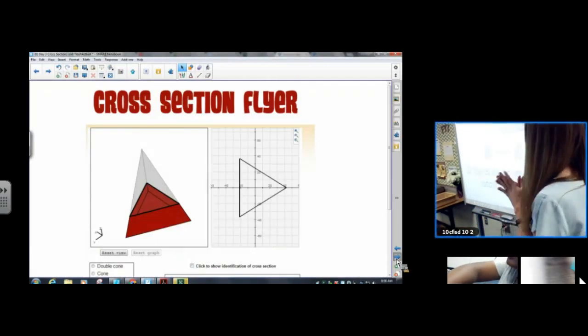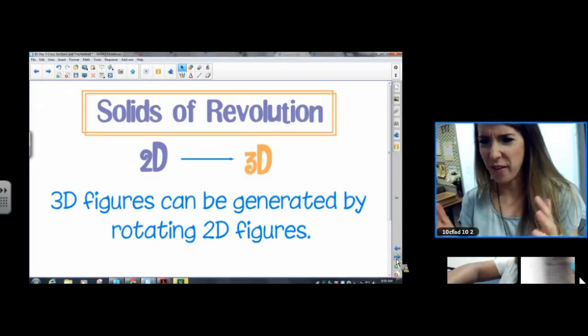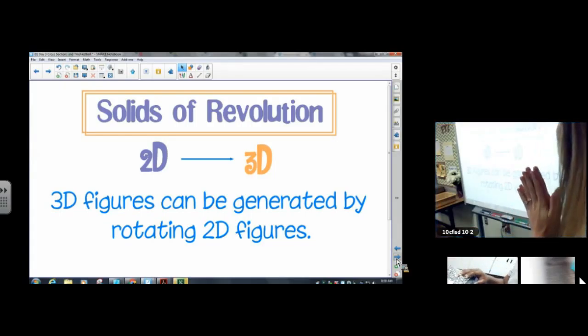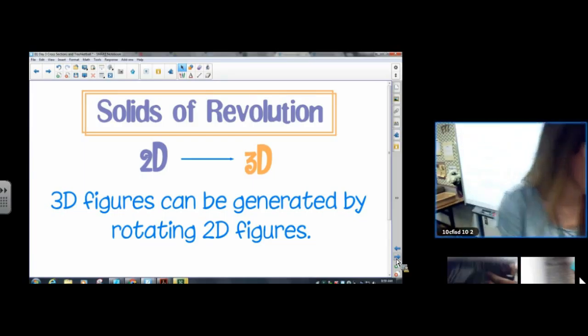Next thing. Solids of revolution. Write this down. I know that floss really did work good with that Play-Doh. Solids of revolution. 3D figures can be generated by rotating 2D figures.